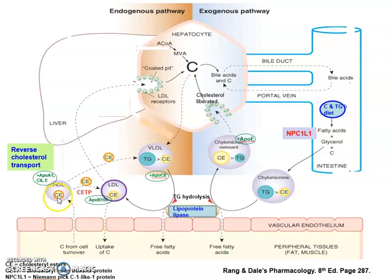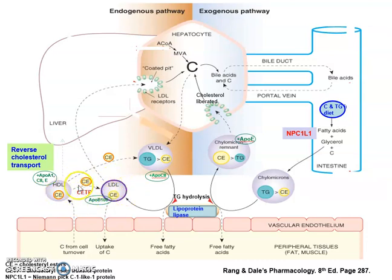HDL can then be either transformed into very low density lipoprotein by transporting the cholesterol esters present within HDL, or it can be transferred into low density lipoprotein by transferring those cholesterol esters. This is mediated by the cholesterol ester transfer protein, and our LDL can enter the liver again, continuing the cycle.